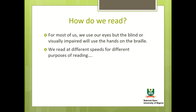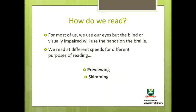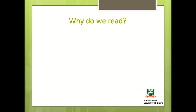We read at different speeds for different purposes of reading. These are: previewing, where you get a general idea of what the text is about without really reading the whole text; skimming, a selective reading method to get an overall impression; scanning, which involves quick reading with quick eye movements to locate specific information; and detailed reading, which is a more focused and concentrated reading.